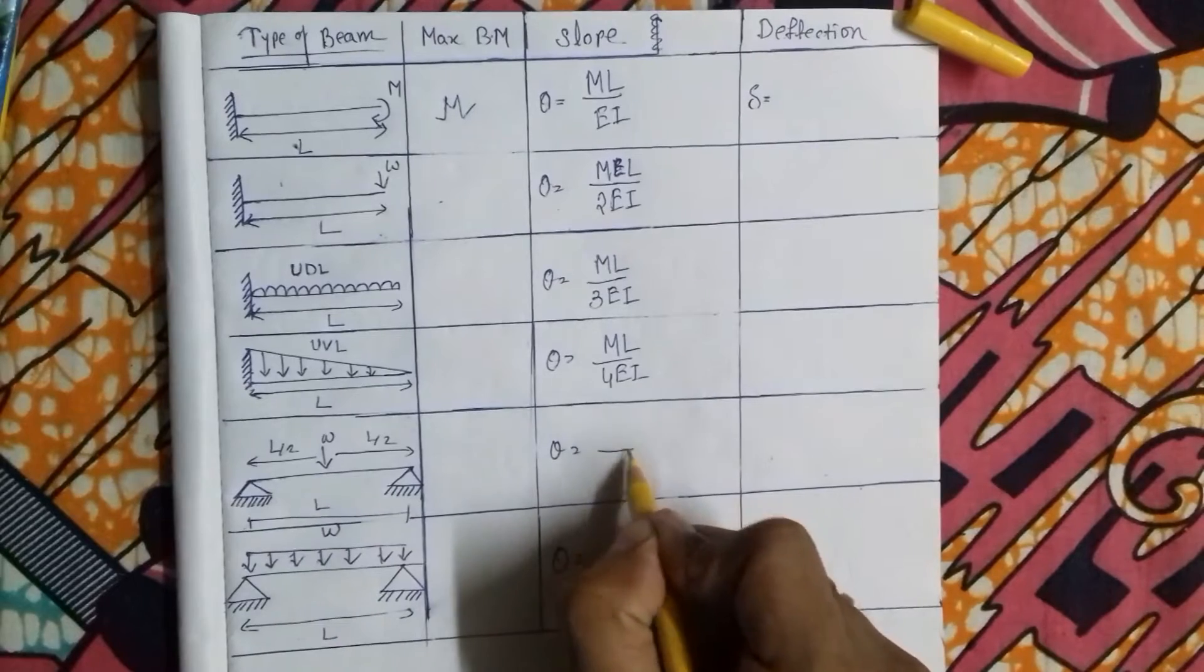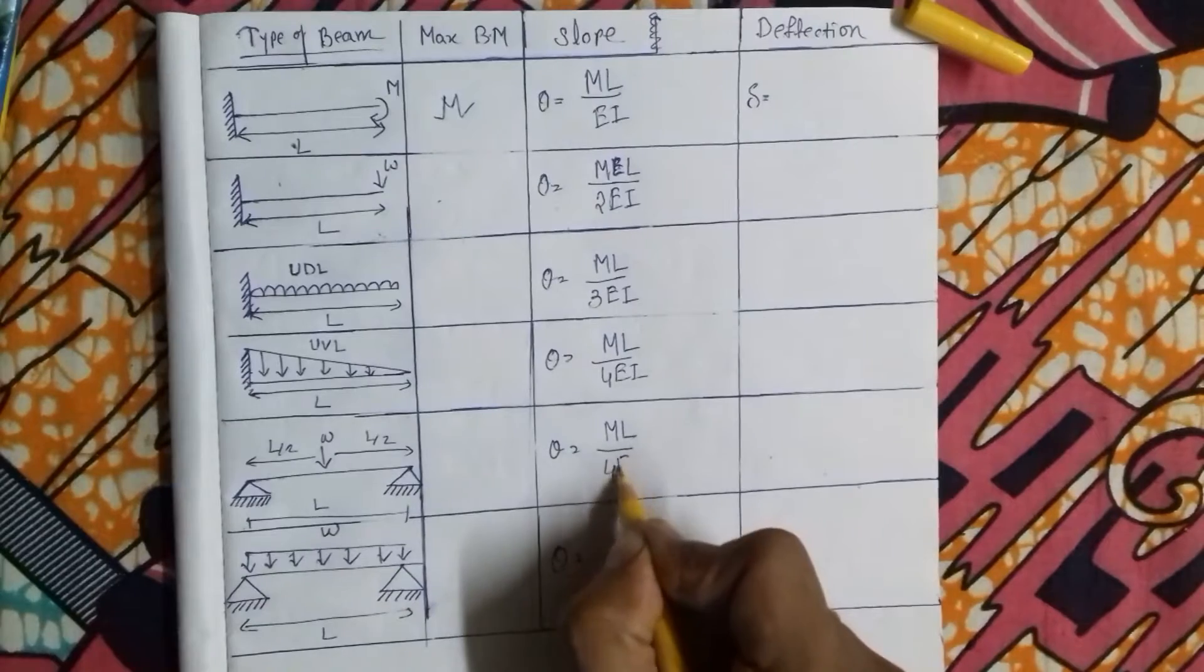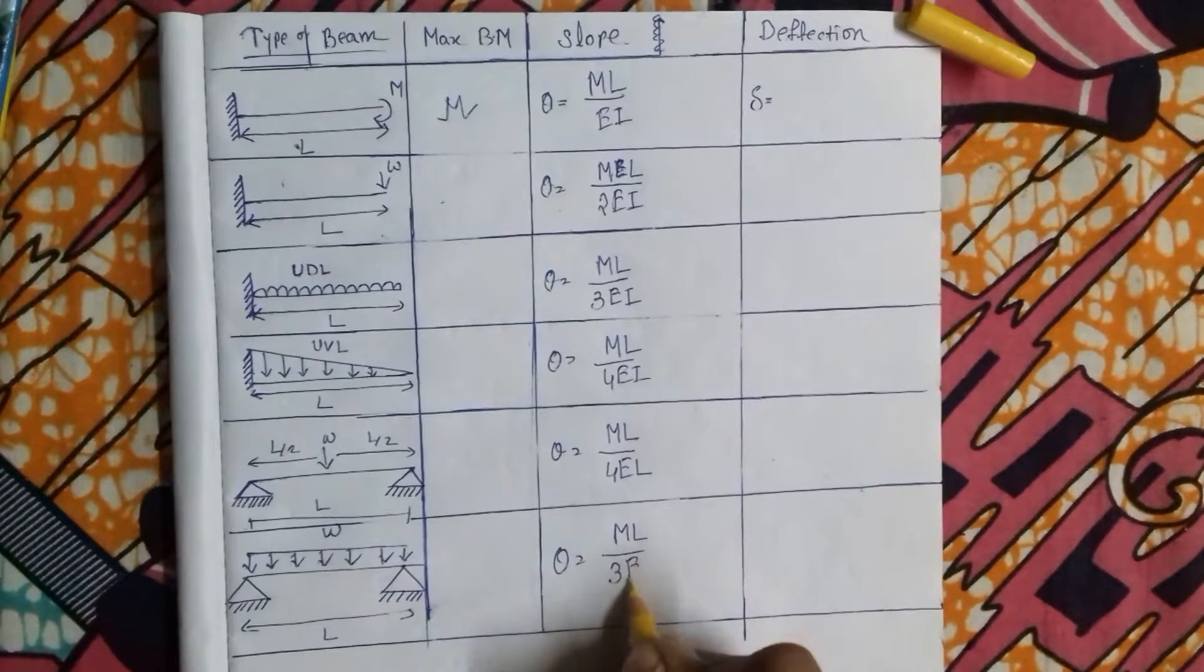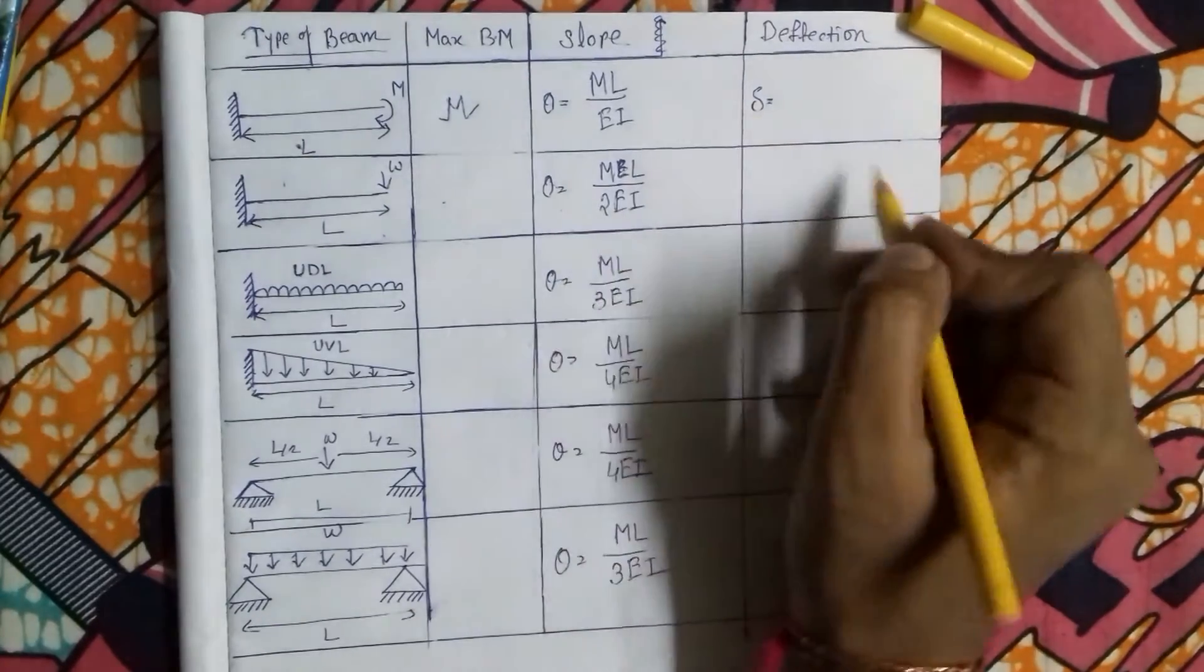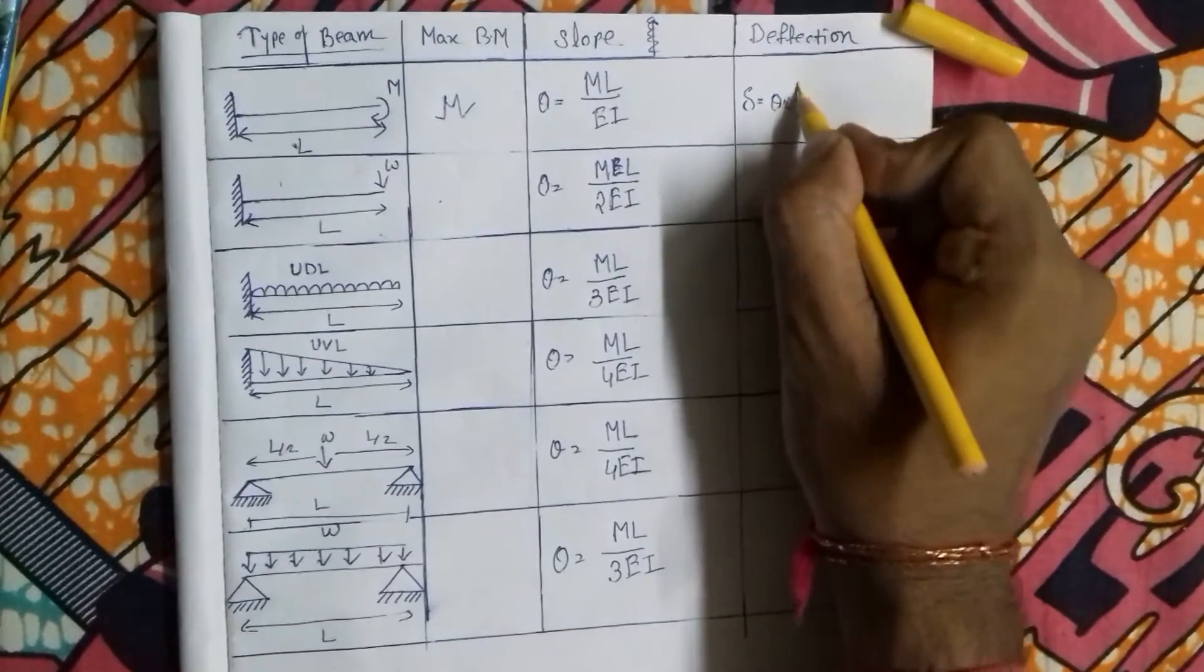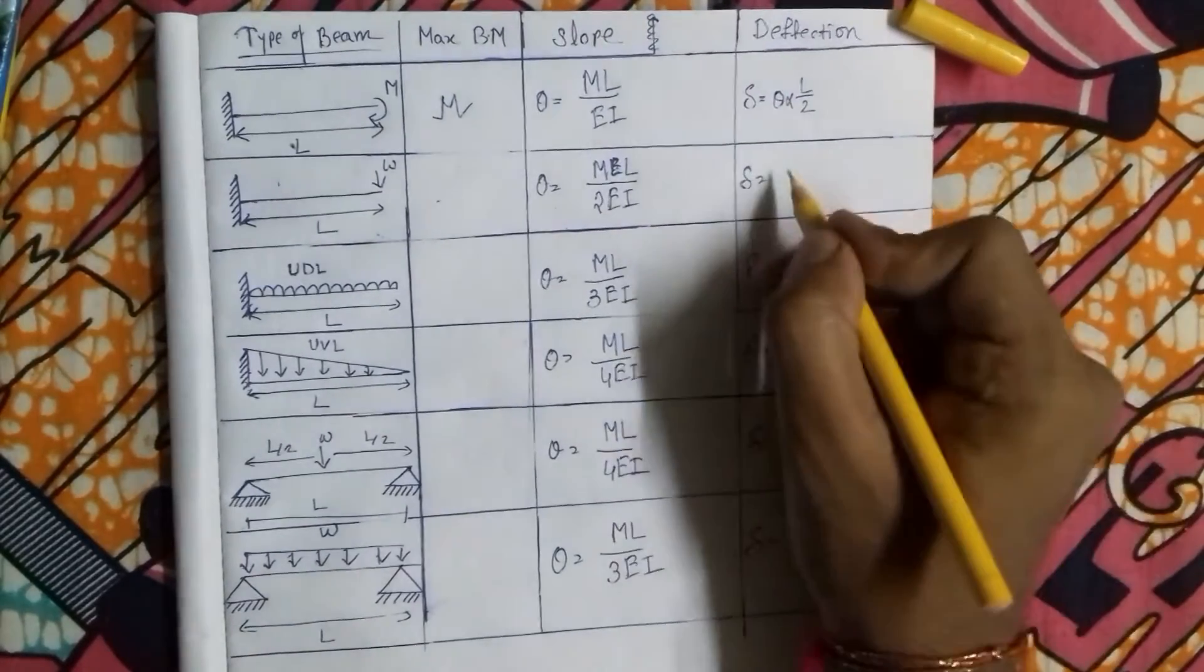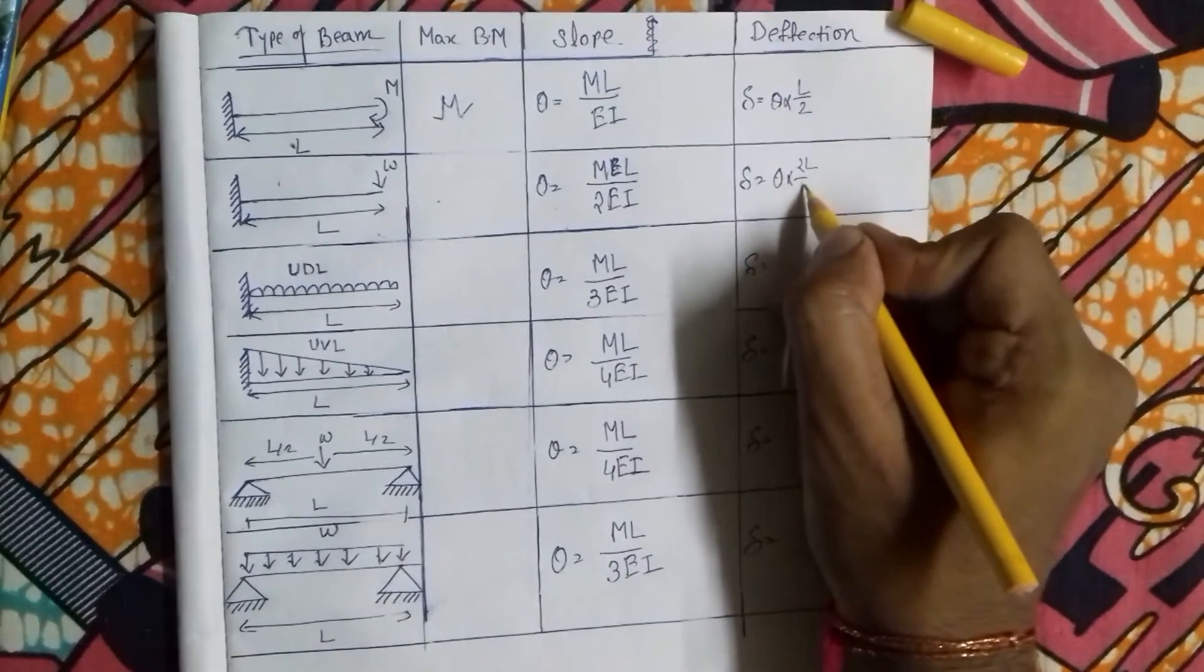ML by 4EI, and in backward motion 4, 3, 3EI. ML by 4EI, and here theta into L by 2, theta into 2L by 3.